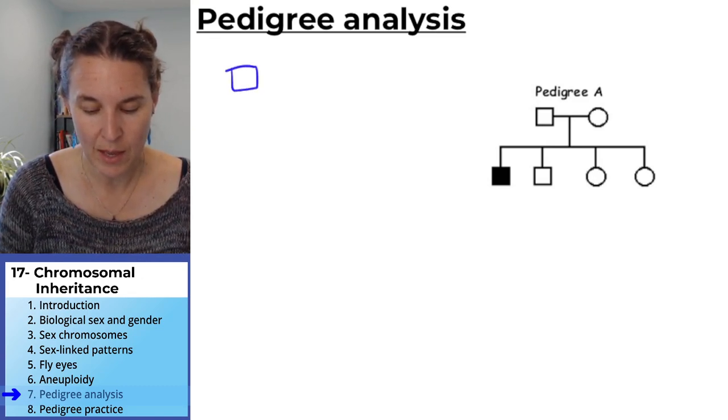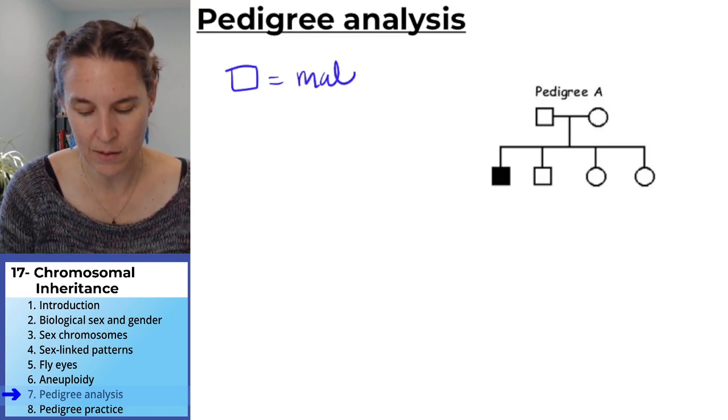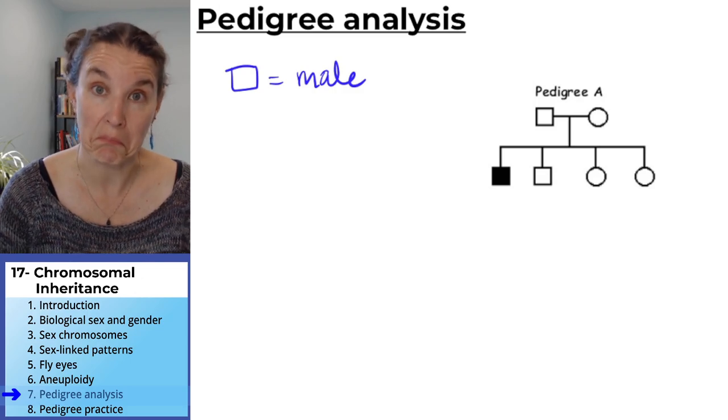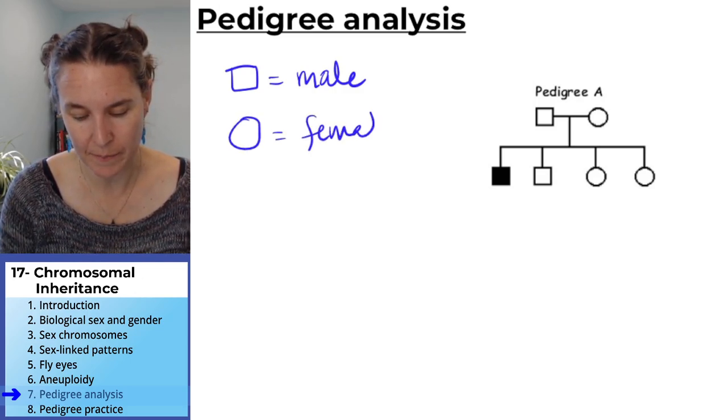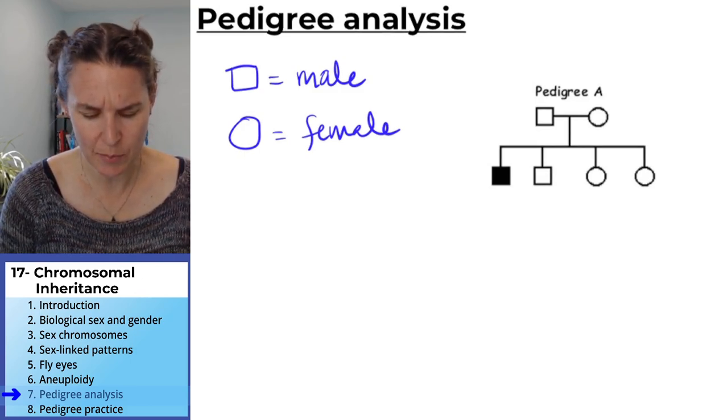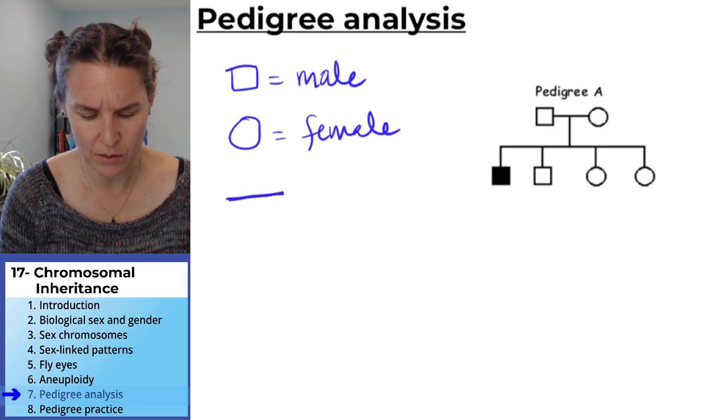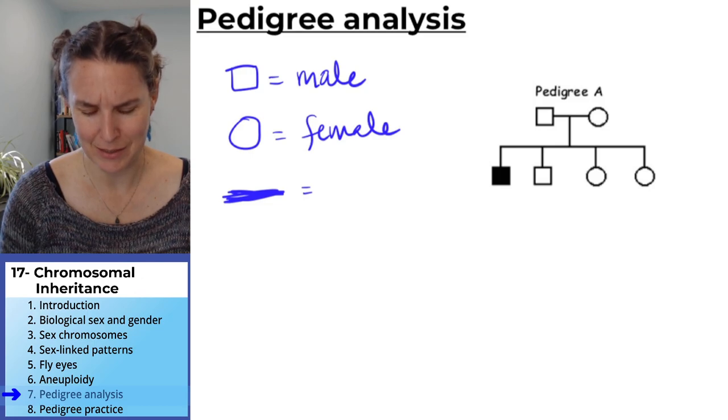So a couple things you need to know about pedigree analysis. First of all, squares are anatomically male humans. Circles are female humans. Connections between them, horizontal connections, are baby making events.